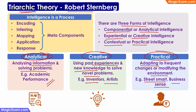So Analytical, Creative, and Practical — three types of intelligence in Triarchic Theory. Sternberg also says that intelligence is actually a process, and it consists of five meta-components.